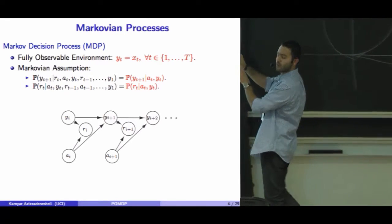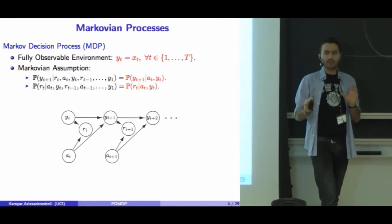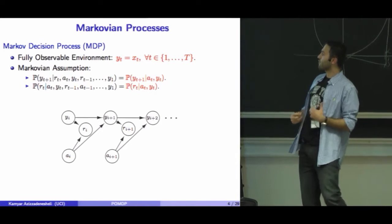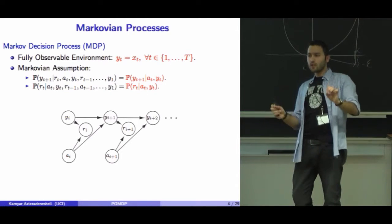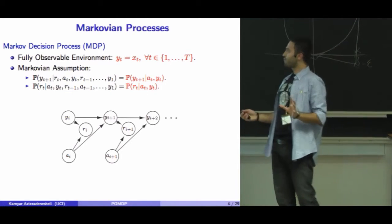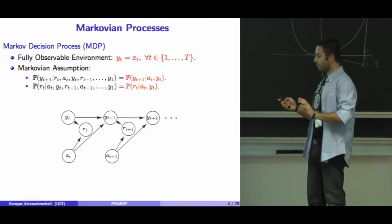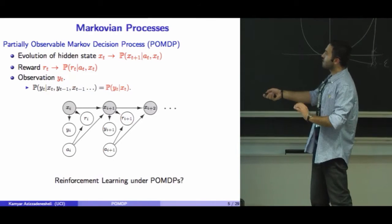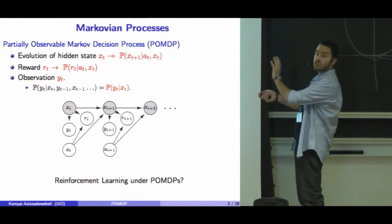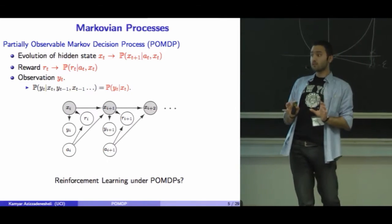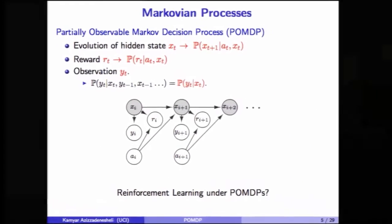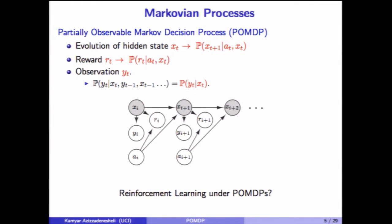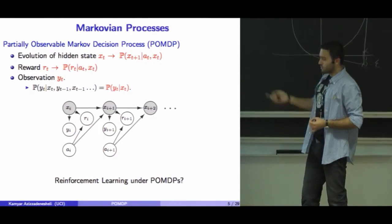The Markovian assumption is really strong and we often cannot have this strong assumption in a real environment. So we look at a more complicated model: Partially Observable Markov Decision Process (POMDP). At each time, the environment is at some hidden state we do not have access to. The environment provides some observation, and the agent chooses some action. Based on this action and the hidden state, we have dynamics over hidden states, and we receive a reward.